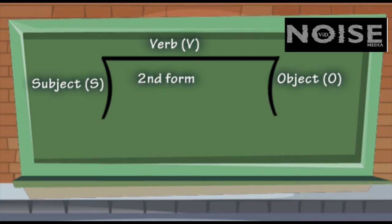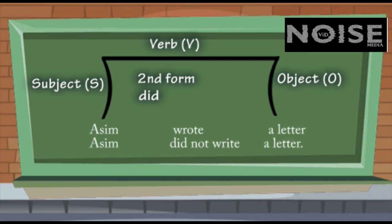Now, the problem is how to change this into negative form. Not difficult at all. Simply, you have to add DID and in negative DID NOT. But then the verb will change, go back into the first form, the base form. Now, look at the first sentence, positive sentence. Aasim wrote a letter. You know how you will change into negative form? Aasim did not write a letter. And why write? Because DID itself shows past tense.